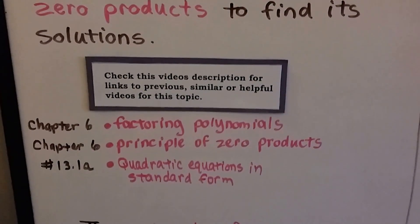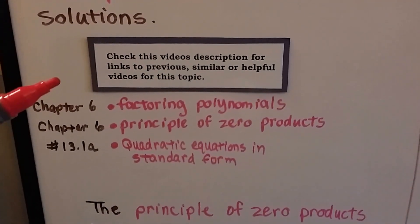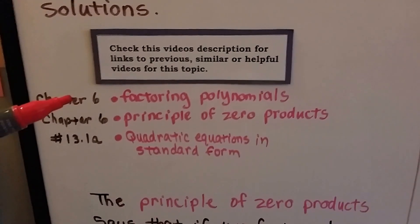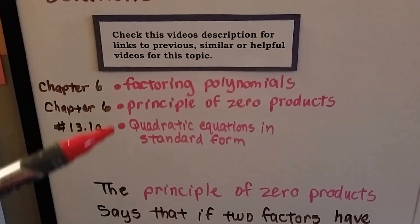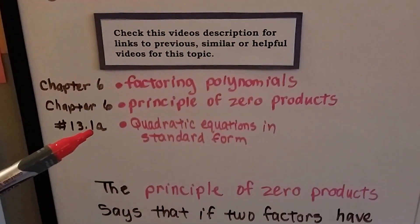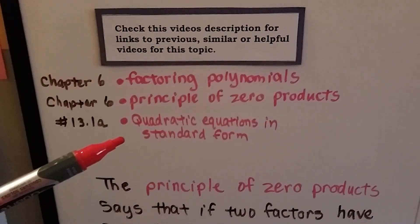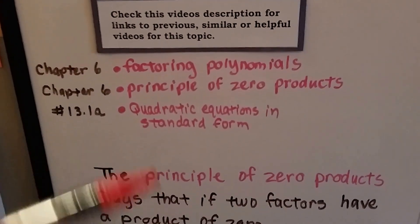If you're really confused right now, you got ahead of yourself. You can check this video's description for links to previous, similar, or helpful videos on this topic. There's going to be links to chapter 6 where we did factoring polynomials and the principle of zero products, and the previous video that we just did talking about quadratic equations in standard form and how you can tell if they're a quadratic equation or not by looking at them.